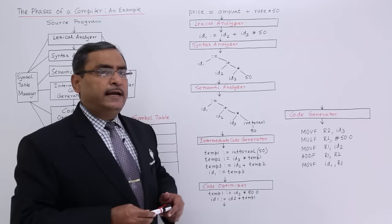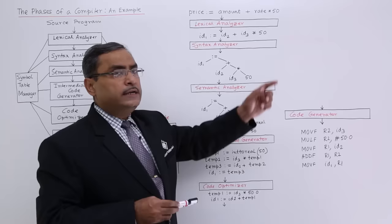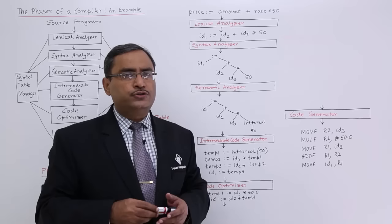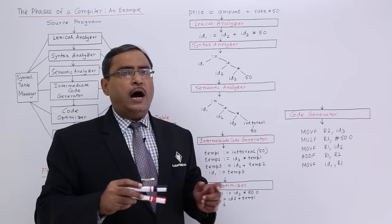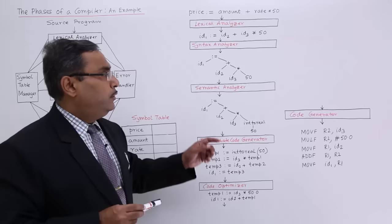Different lexical analyzers can interpret this line in different ways. Now it moves to the syntax analyzer. The syntax analyzer checks whether these tokens are in the proper grammatical order according to the grammar of the language. Each programming language should have some dedicated grammar with a set of production rules. It checks whether all these tokens are in the proper sequence according to the grammar, and to do that it constructs a parse tree.